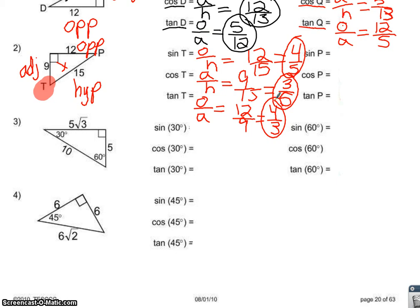Next we're going to look at problems that involve a square root — problems 3 and 4 both deal with a square root, so we'll look at those together. I'm going to leave sine of P, cosine of P, and tangent of P up to you. The first problem we have is sine, cosine, and tangent of 30 degrees. I start by locating the 30-degree angle.